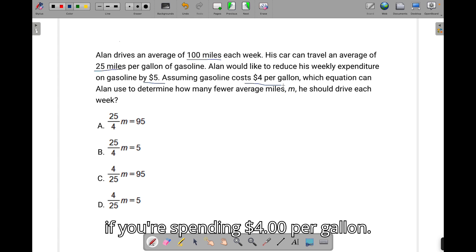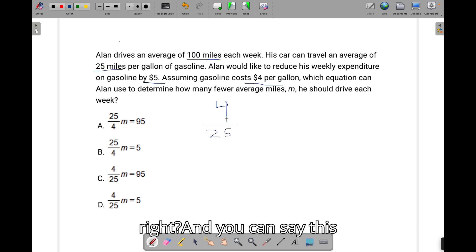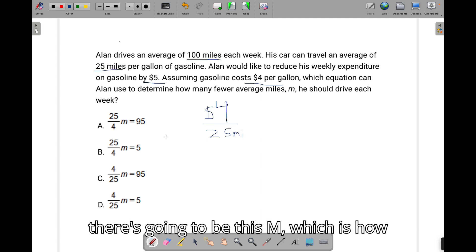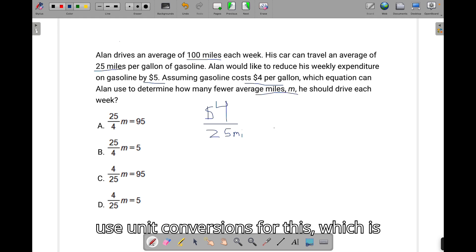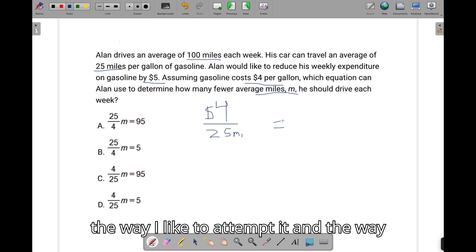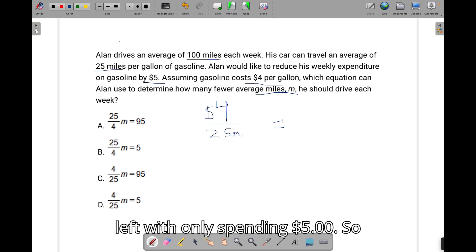If you're spending $4 per gallon, that's the same as spending $4 for that 25 miles, right? And you can say this is $4, and this is going to be our miles. Now if we look at everything multiplied by this fraction, there's going to be this m, which is how many fewer miles. Now you can use unit conversions for this, which is the way I like to attempt it, and the way it makes sense. You see he wants to be left with only spending $5.